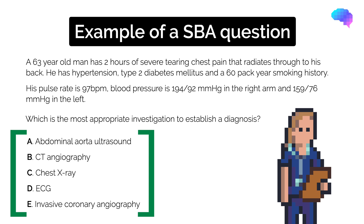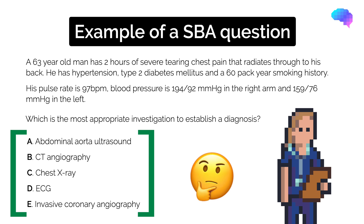Finally, we are presented with the options. One of these options is the best answer to the question we have been posed, hence the name single best answer question. Four of the options will be incorrect — these are called distractors, and they get this name because they are trying to distract you from the best answer.